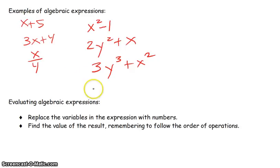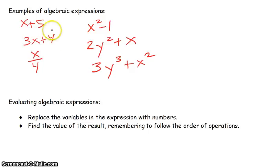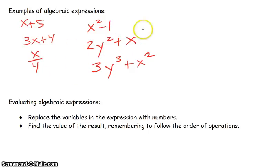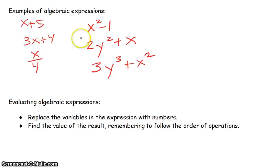Just to clarify something: the difference between an expression and an equation is that an expression does not have an equal sign. That is why all of these are expressions — there are no equal signs — and they're algebraic because they contain variables and numbers.